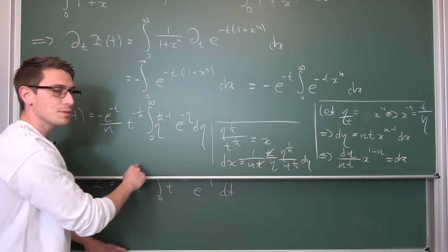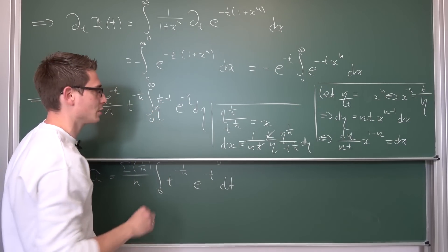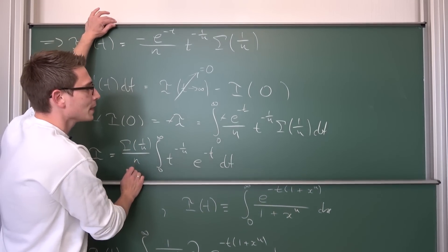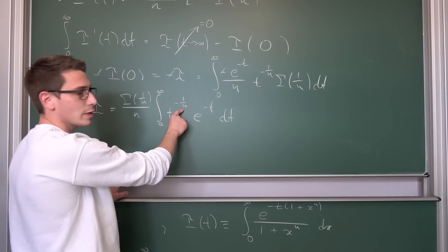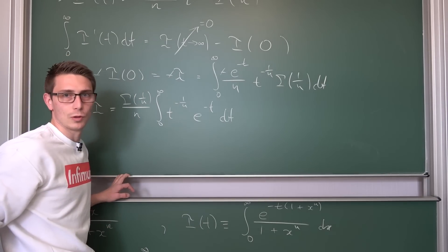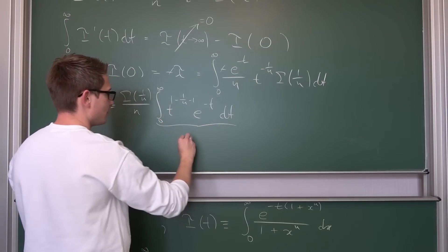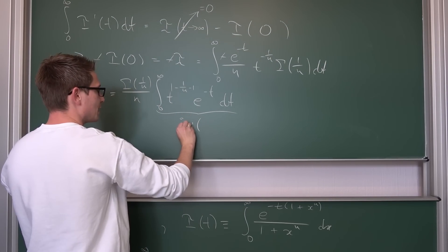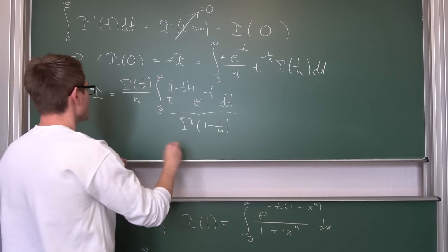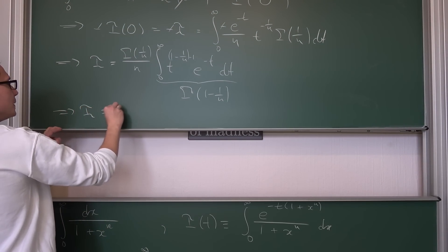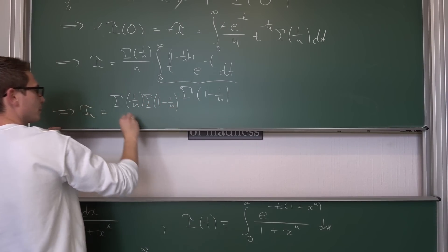The only thing missing to get the gamma function we need is a minus 1 in the exponent of t. To get there, we add zero to the exponent: plus one and then subtracting one. Meaning what we have is nothing other than the gamma function of 1 minus 1 over n. The negative signs on both sides cancel out, leaving us with a final answer of I equal to gamma of 1 over n times gamma of 1 minus 1 over n, divided by n.